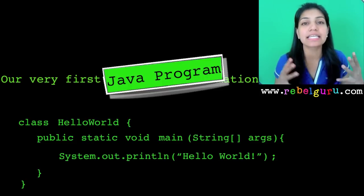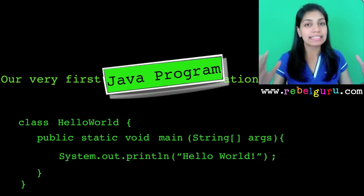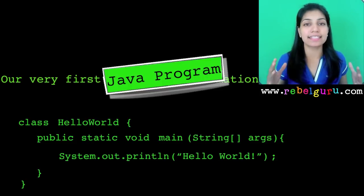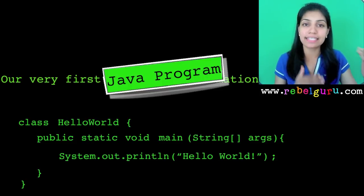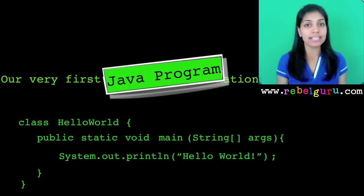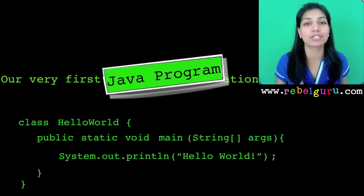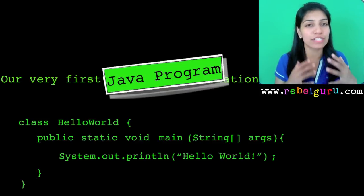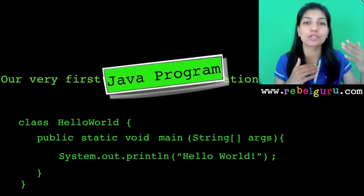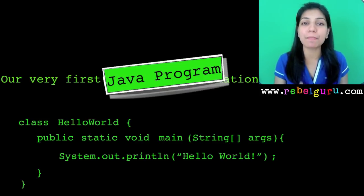The first line is 'class HelloWorld'. This line says that this is going to be a class called HelloWorld. Now, as you know, Java is object-oriented, which means almost all your programs are going to have classes, and almost everything is going to be part of a class.